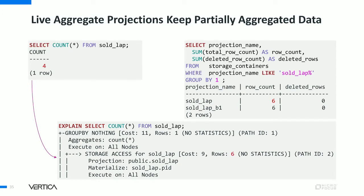You can see how this works by counting rows in the live aggregate projection. If you run SELECT COUNT(*) from the live aggregate projection, you might get four rows, but if you EXPLAIN the query, you will see it was reading six rows internally — because each of the two previous inserts created partial aggregation rows in the projection. Live aggregate projection keeps partially aggregated data; the final aggregation always happens at query time.